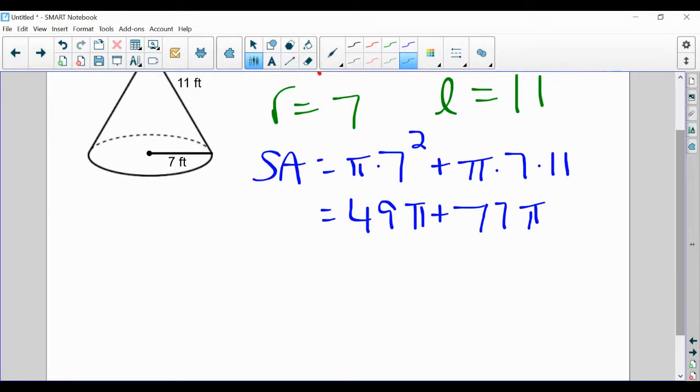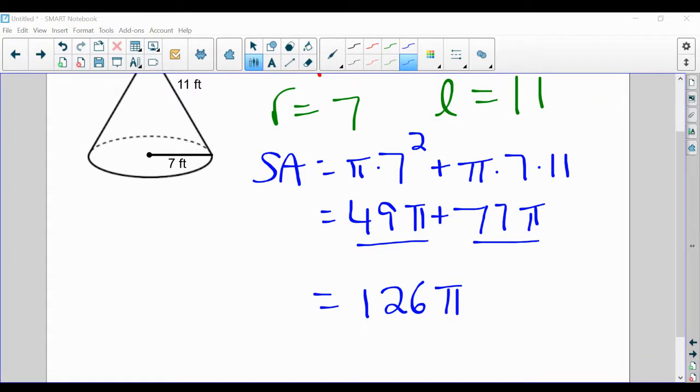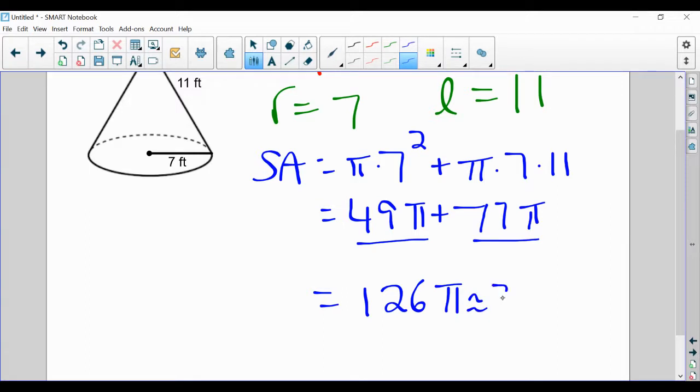So I get 49 pi plus 77 pi. And now I can combine like terms, just like we did with the cylinders today. 49 pi plus 77 pi is a total of 126 pi. Now that answer is an exact form. If I wanted to, I could go to a calculator and use the pi button to get a rounded answer of 395.8.